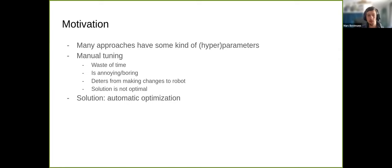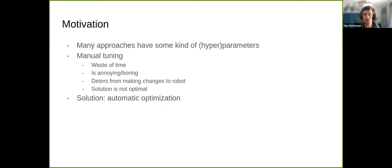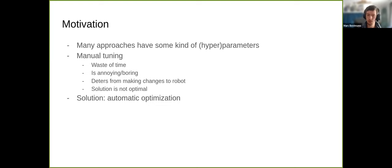So why should we care about this topic? Many approaches in robotics, especially in motions, have some kind of parameters or hyper-parameters. We can tune those manually, and humans are okay at doing this, but it's a huge waste of time that we could spend on actual research. It's also annoying, and it hinders you from making hardware changes to your robot — because then you need to re-tune your walk parameters.